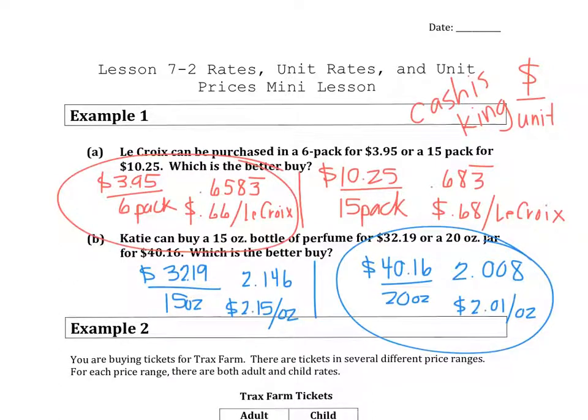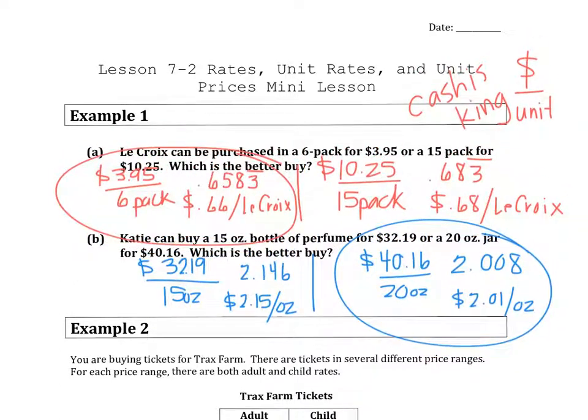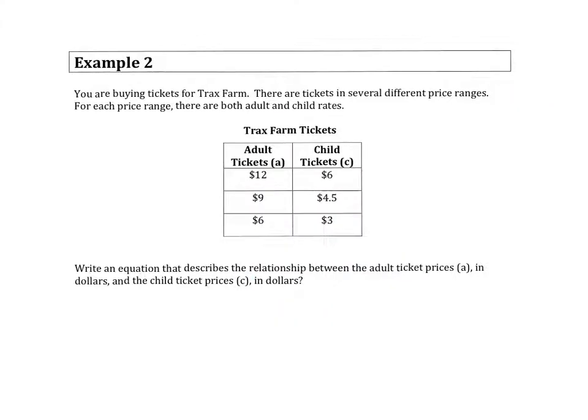Now in the second portion of the problem, in the second problem, we're buying tickets for Trax Farm. There are tickets in several different price ranges. For each price range, there are adult and child rates. So a child obviously wouldn't cost as much as an adult ticket, where A we're denoting as an adult price, and C, the variable for the child price. It says write an equation that describes the relationship between the adult price and the child price.